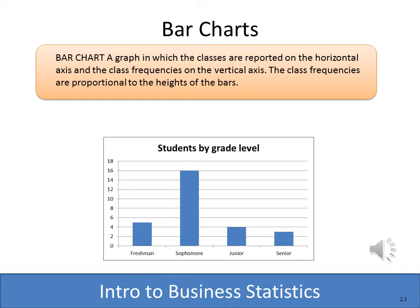A bar chart — and just to confuse the matter a little bit, Excel would actually call this a column chart — but a bar chart is just a graphical representation of the frequency distribution. So in this case, we have a column or a bar for each of the different grade levels: freshman, sophomore, junior, and senior, and then the graphical representation of how many there are within each category.